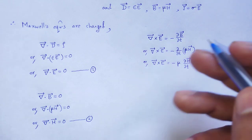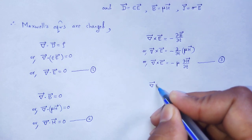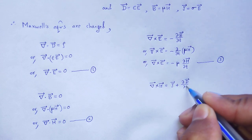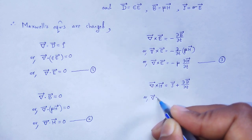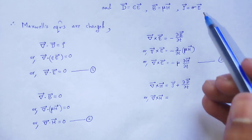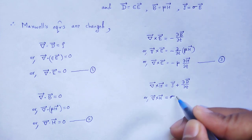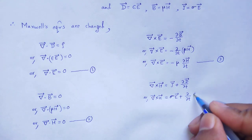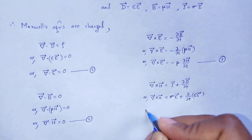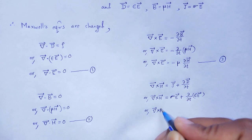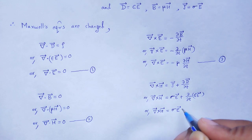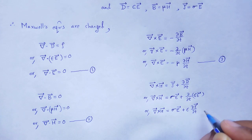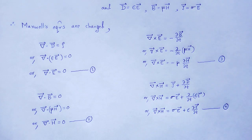Fourth Maxwell's equation changes to: curl of H vector equals J vector plus del D by del t. Substituting J as sigma E vector and D vector as epsilon E vector, we get curl of H vector equals sigma E vector plus epsilon del E by del t. This is equation number 4.